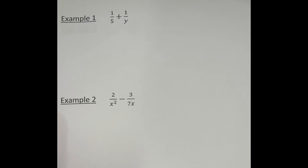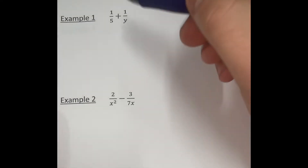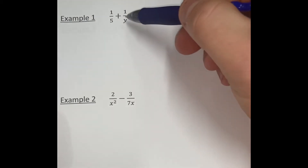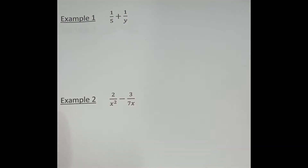In today's video we're going to talk about how to add rational expressions that do not have common denominators. In order to add, we first need to make the denominators the same. We have 1 over 5 plus 1 over y. We need to make those denominators the same by multiplying by a fancy version of 1.